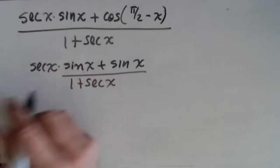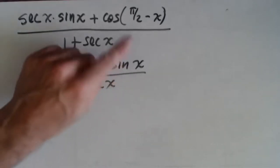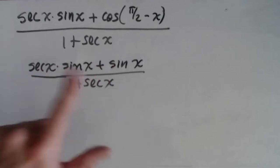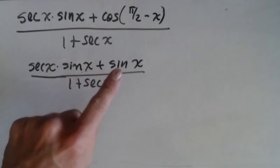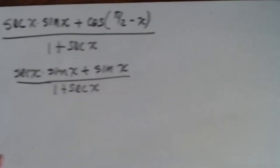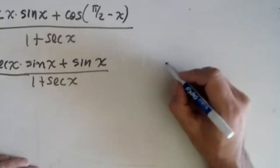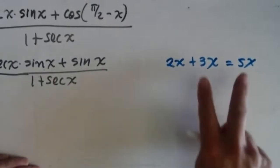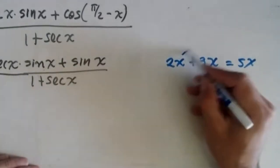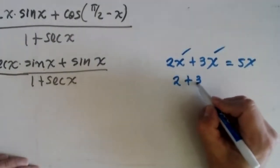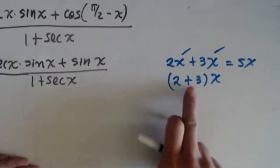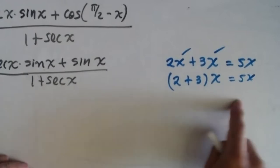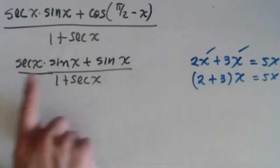So I write my first expression: secant x sine x plus sine of x over 1 plus secant x. This looks better. Now, this has sine and this has sine. To add these, I have to remember what I did in Algebra 1: 2x plus 3x equals 5x, because x is the common factor. I factor: (2+3)x = 5x. I'm going to do exactly the same here.